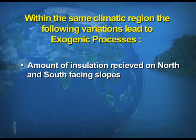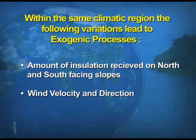These changes within a climatic area are based on: first, the amount of insolation received on north- or south-facing slopes. Insolation is the amount of heat received by the earth, and it does not remain the same everywhere, so exogenic processes vary accordingly.